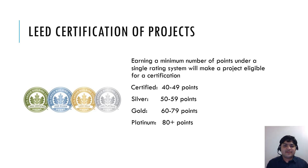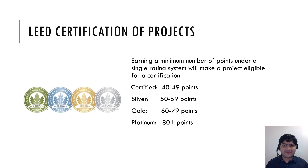So how does a project get LEED certified? To be a LEED certified project, you have to earn a minimum number of points under a single rating system to be eligible for certification. There are four different levels of certification starting from Certified to Platinum — Platinum being the highest. Certified requires 40 to 49 points, Silver is 50 to 59 points, Gold is 60 to 79 points, and Platinum requires more than 80 points.